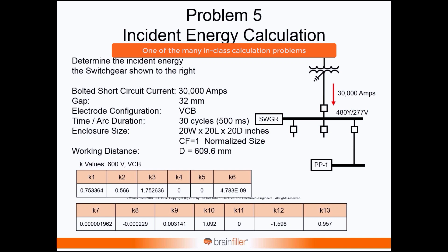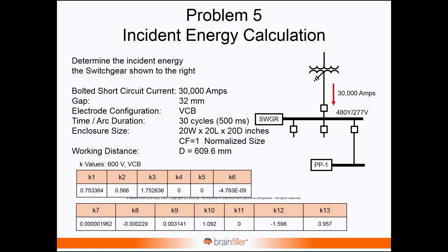In the 30,000 amp case I tried to make this identical to the case I had for my 2002 class. We had 30,000 amps of bolted short circuit current — 30kA. The gap used in the original problem was 32 millimeters because it's switchgear. The duration from the original 2002 class problem was 30 cycles, 500 milliseconds.